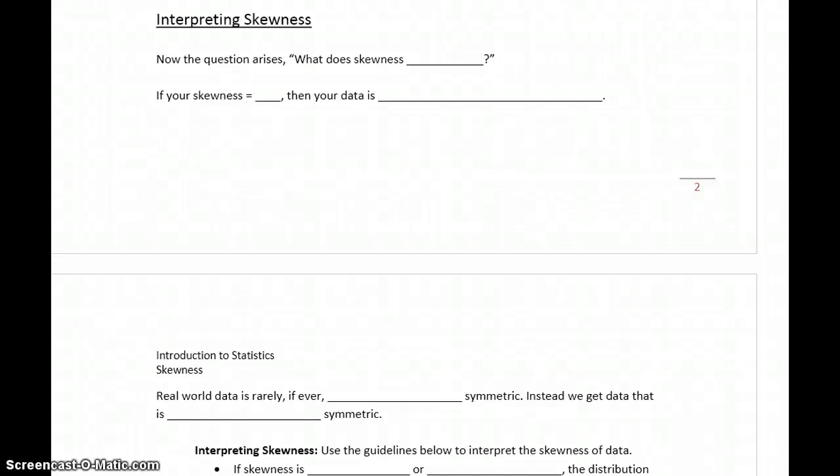Now we have the ability to calculate skewness, this number, but until we give that number some context, it's not very useful information. So we need to talk about what does skewness mean. When we get that numerical value, how do we interpret it? What does it tell us about our data?